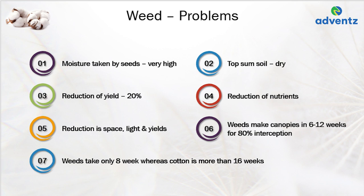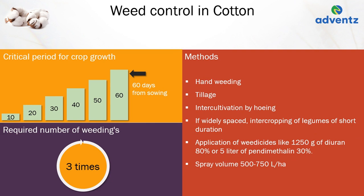The critical period for crop growth is 60 days from sowing. Normally, weeding has to be done 3 times during the active growth period of the crop. Different methods like hand weeding, tillage, and intercultivation by hoeing can be used to remove weeds. If widely spaced, intercropping of short-duration legumes helps in controlling weeds. Application of weedicides like 1250 grams of Durex 80 WG or 5 litres of pendimethalin 30% in 200–300 litres of water per acre helps in controlling weeds, with a spray volume of 500–750 litres per hectare.